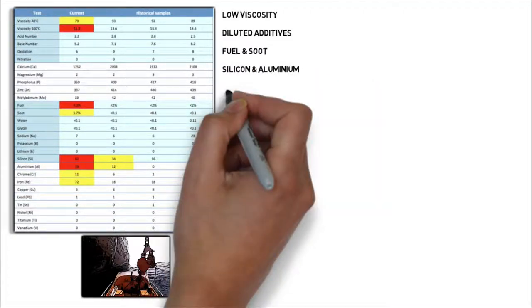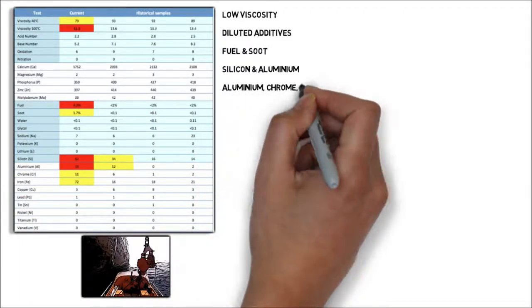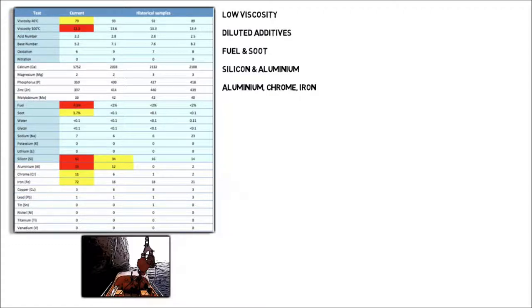There is also silicon from sand or dirt contamination and wear elements of chrome and iron from piston rings and cylinder liners. The aluminum could be either from dirt when linked with silicon, piston wear or both.